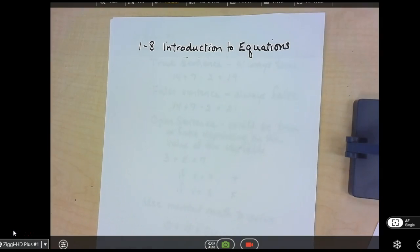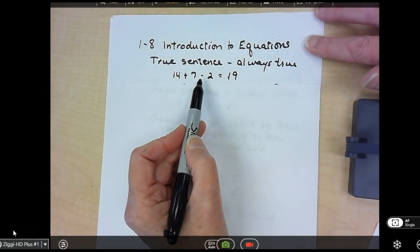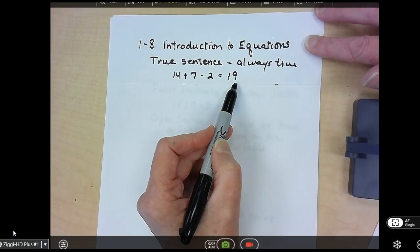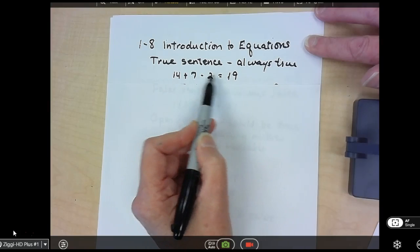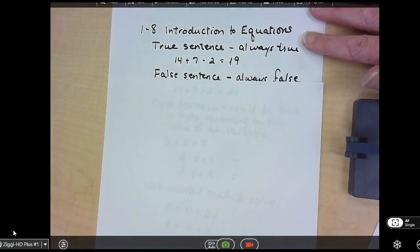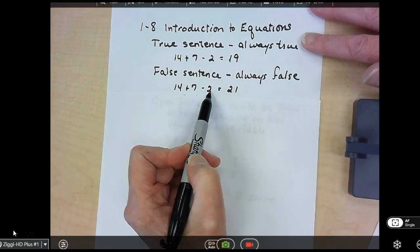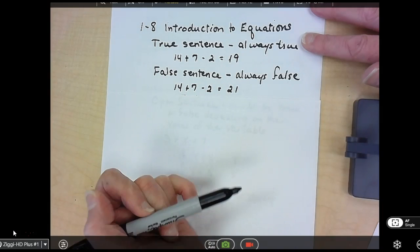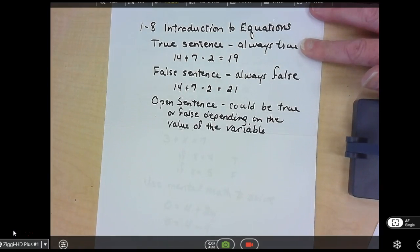Section 1-8 is the introduction to equations. So with equations, that's when we have our equal sign. We can have a true sentence that is always true, like 14 plus 7 minus 2 equals 19. So 14 plus 7 is 21, minus 2 is 19. So that statement is always true. A false statement is always false, like 14 plus 7 minus 2. We already found out it was 19. So if it says it equals 21, that would be false.